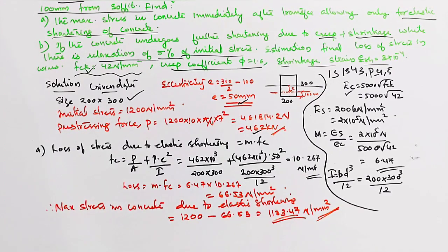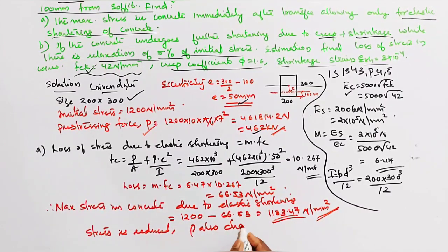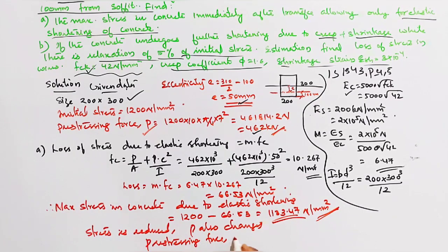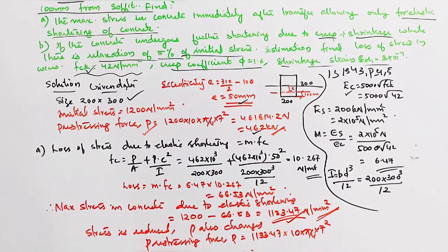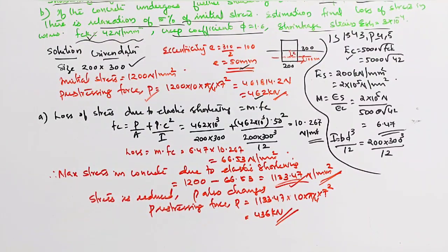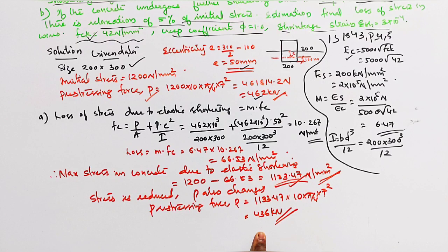After elastic shortening, the stress is reduced to 1133.47 N/mm², so the pre-stressing force also changes. The new pre-stressing force P = 1133.47 × area of 10 wires = 436 kilo Newton.